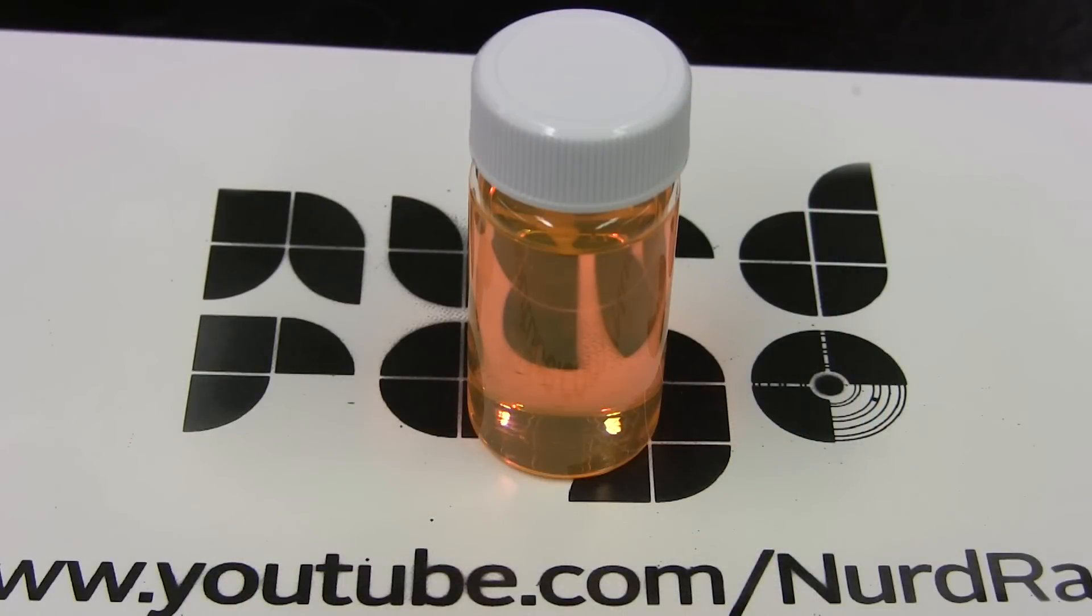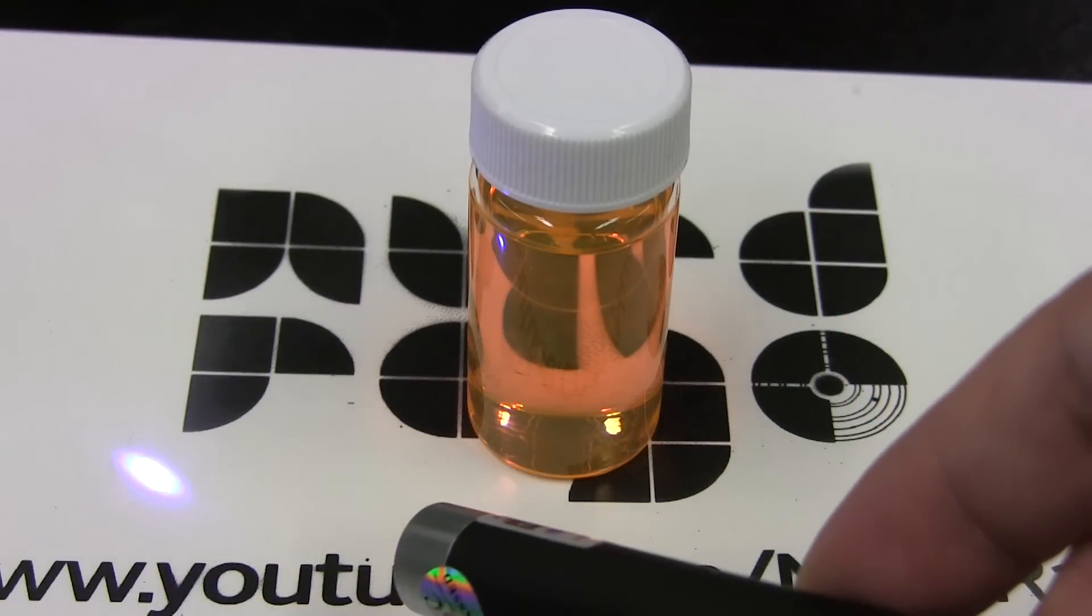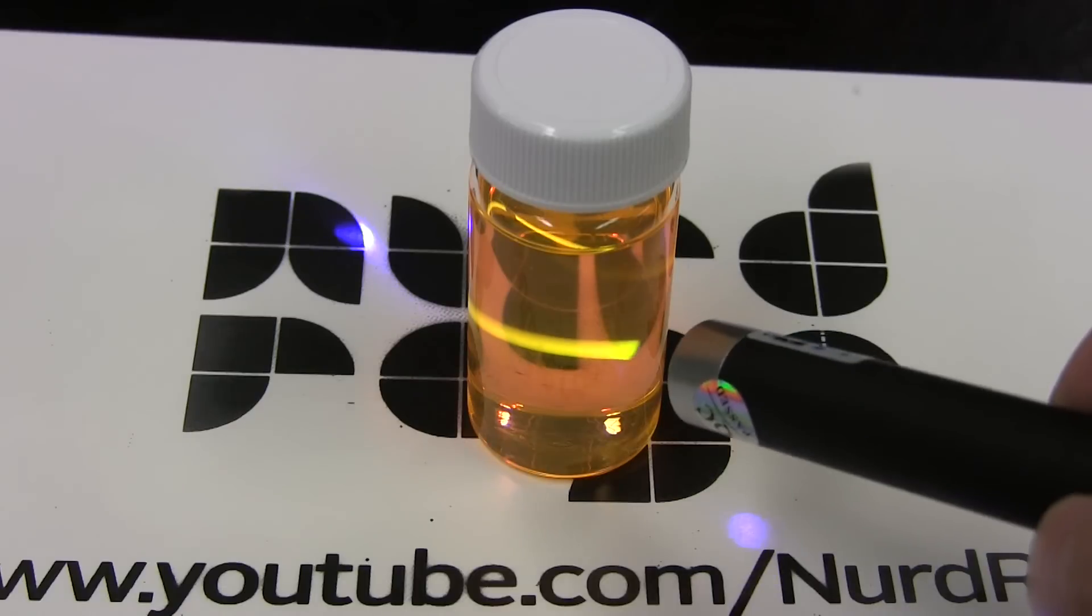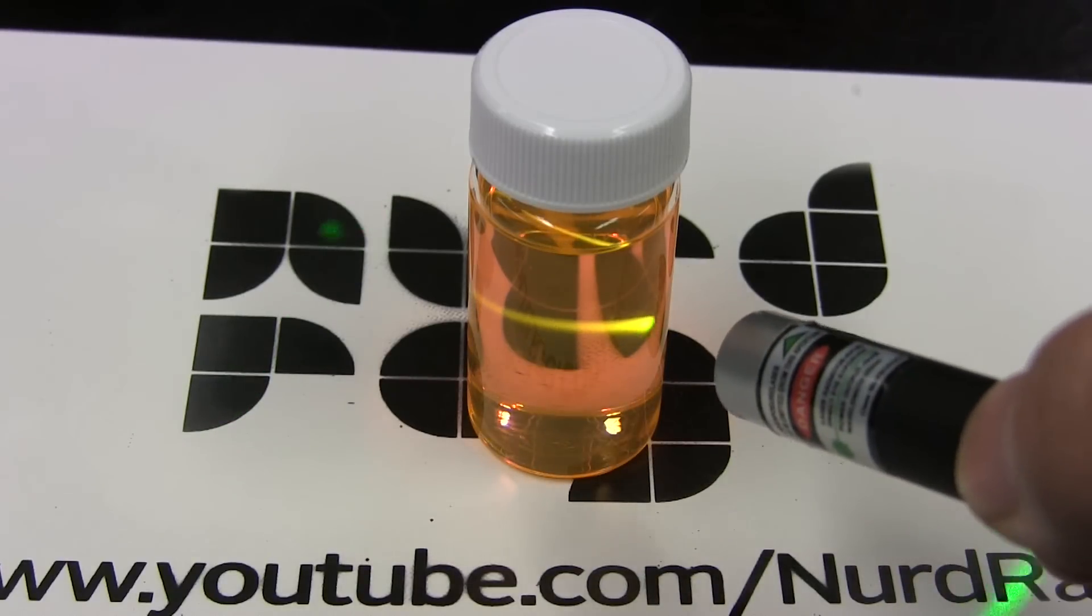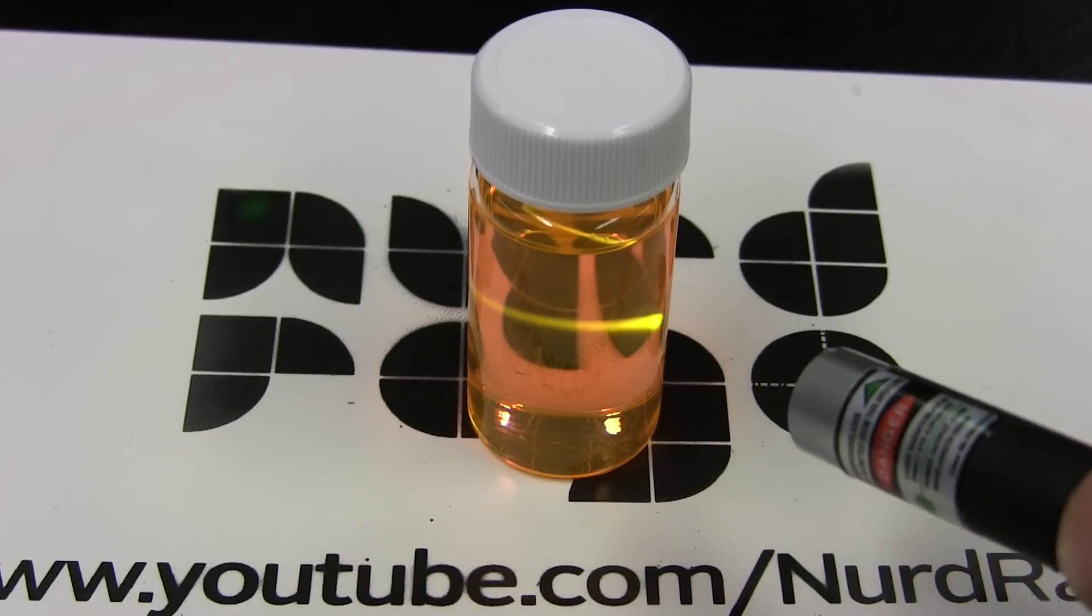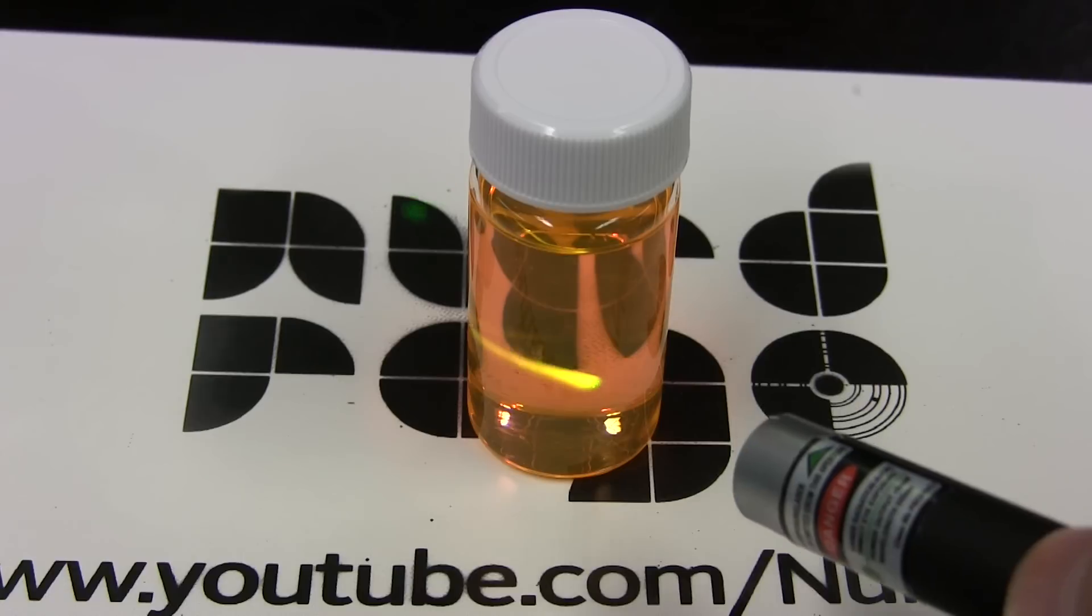Here's a sample of yellow fluorescent dye and I'm going to shine a violet laser at it. As expected it glows yellow. Now here I have a green laser and it too can activate the dye and emit yellow light. Proving you don't always need ultraviolet light.